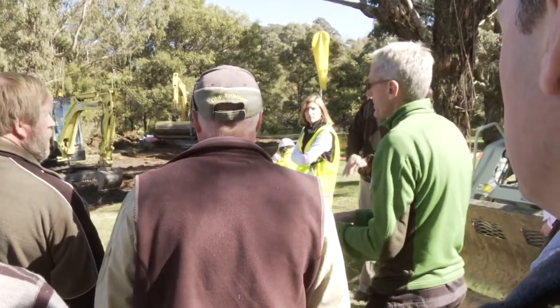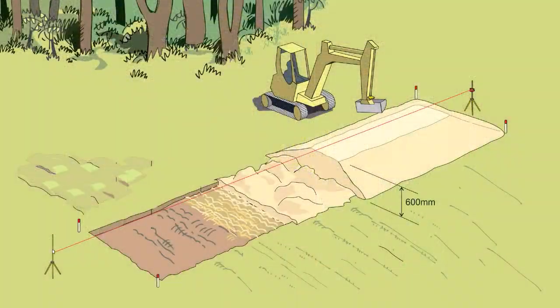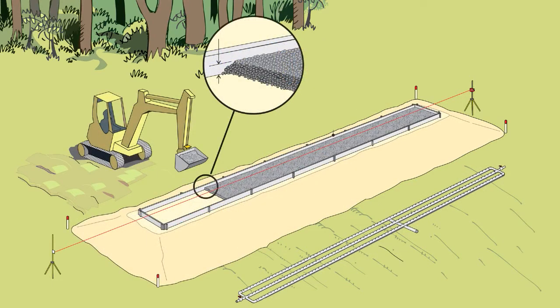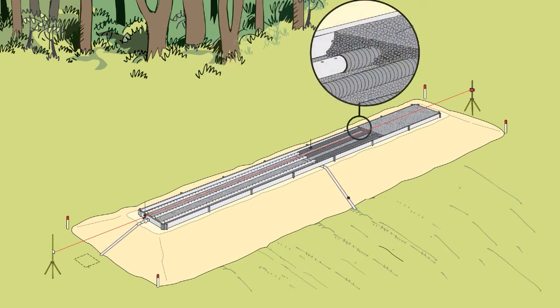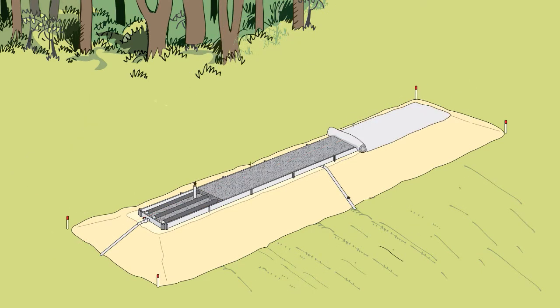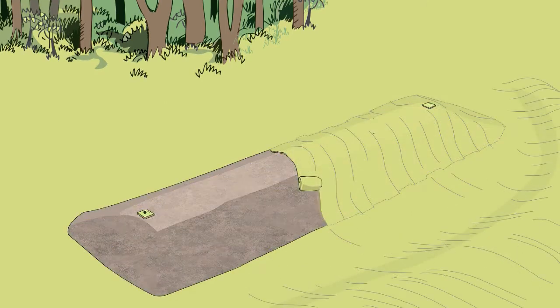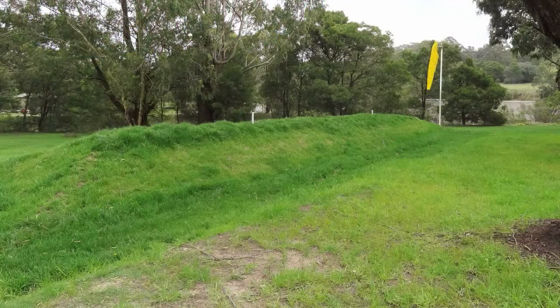We went to a consultant and the design he recommended was a sand mound, often known as a Wisconsin sand mound. It's an effluent disposal and treatment system — it provides secondary treatment within the mound and then that effluent gets disposed of into the subsoil. The key thing about Wisconsin sand mounds is they're a very effective way of treating effluent and disposing of it over a small footprint.